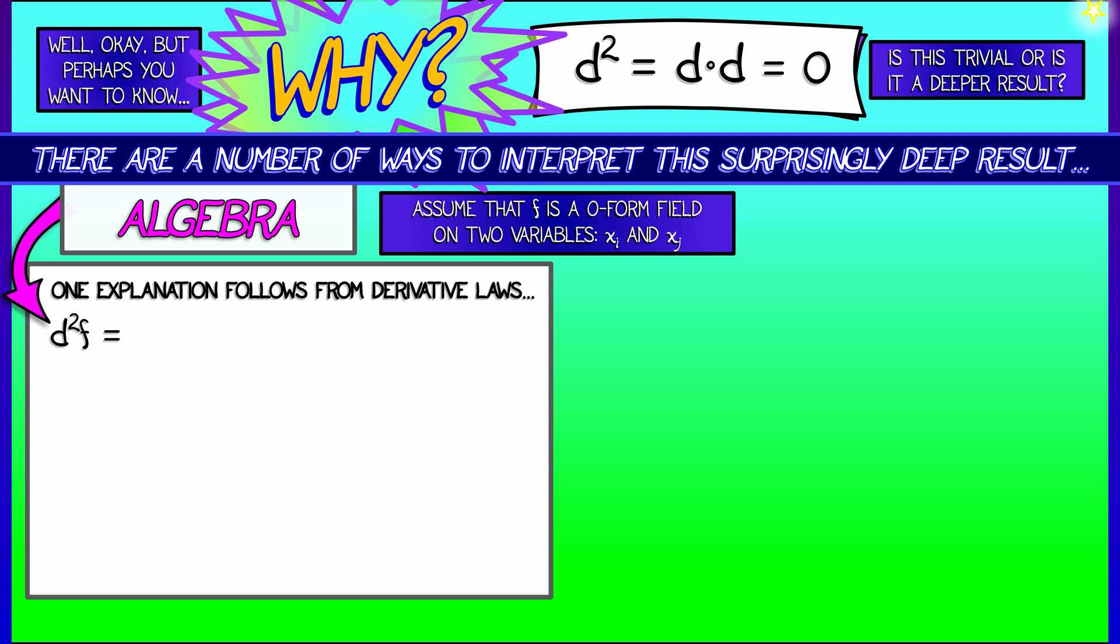Now if we think about d squared in terms of the algebra of the differentiation operator, then let's see what happens. What is d squared f? Well, it's d of df, the gradient one form.